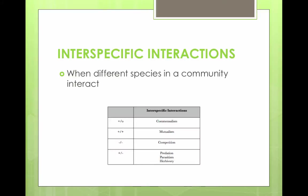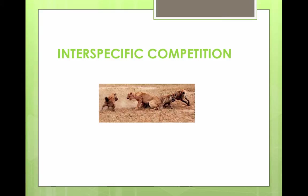These different organisms have inter-specific interactions. This is when different species in a community interact with each other. Inter-specific competition can also occur amongst individuals in different species when they compete for a resource.